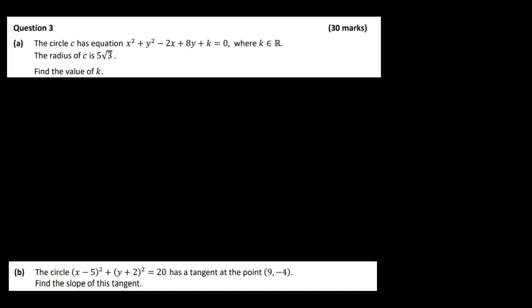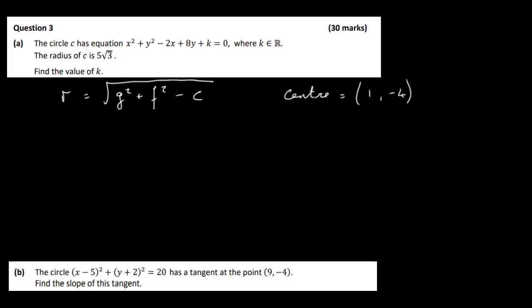We're going to start by looking at the radius. The radius is the square root of g squared plus f squared minus c. The center of our circle is half the coefficient of x with a sign change, so that's 1, and half the coefficient of y with the sign change, so that's minus 4 — giving center (1, -4). This is minus g, minus f.